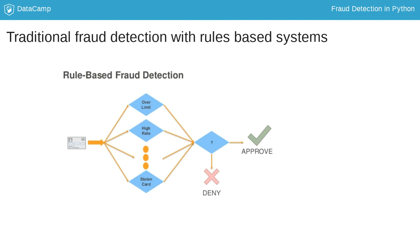Traditionally, fraud analysts use rules-based systems for detection of fraud. For example, in the case of credit cards, analysts might create rules based on location and block transactions from risky zip codes. They might also create rules to block transactions from cards used too frequently, for example in the last 30 minutes. Some of these rules can be highly efficient at catching fraud, whilst others are not and result in false alarms too often.